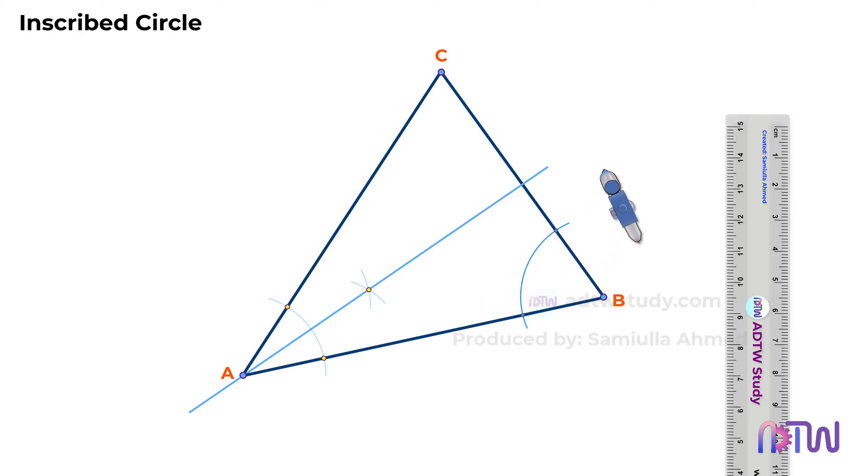After this, using these two intersection points as center, cut the arcs as shown. In the end, draw a line which passes from point B and this newly obtained intersection point as shown.